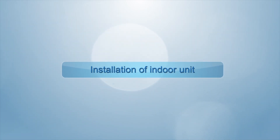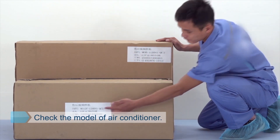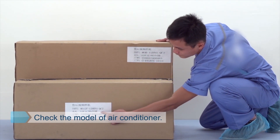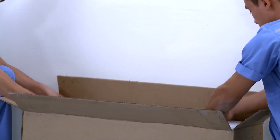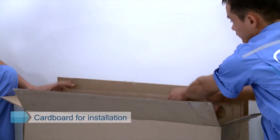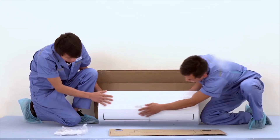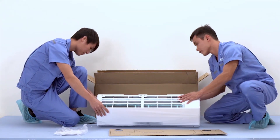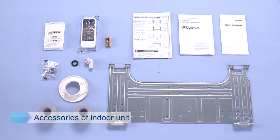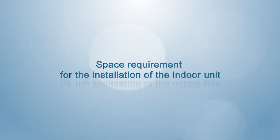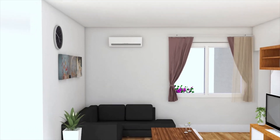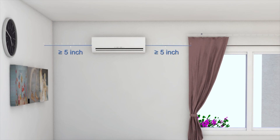Installation of indoor unit. Confirm whether the indoor unit matches the outdoor unit according to the model of the purchased product. Unpack the packaging box, take out the indoor unit, and examine whether there is any scratch, deformation or other defects on the panel. Take out the cardboard for installation, take out the accessories, and check whether the accessories are complete. The right and left sides of the indoor unit should be more than 5 inches from the wall, the upper side more than 6 inches from the ceiling, and the lower side more than 90 inches from the ground.